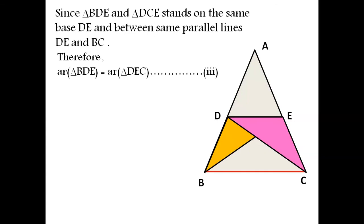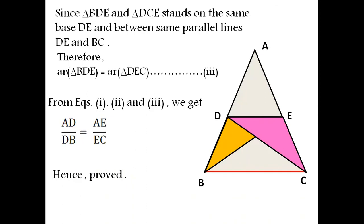From equations 1, 2, and 3 we observe LHS of equation 1 and 2 are equal. So we can easily equate their RHS which comes as AD by DB which is equal to AE by EC. Hence, the basic proportionality theorem is proved here.